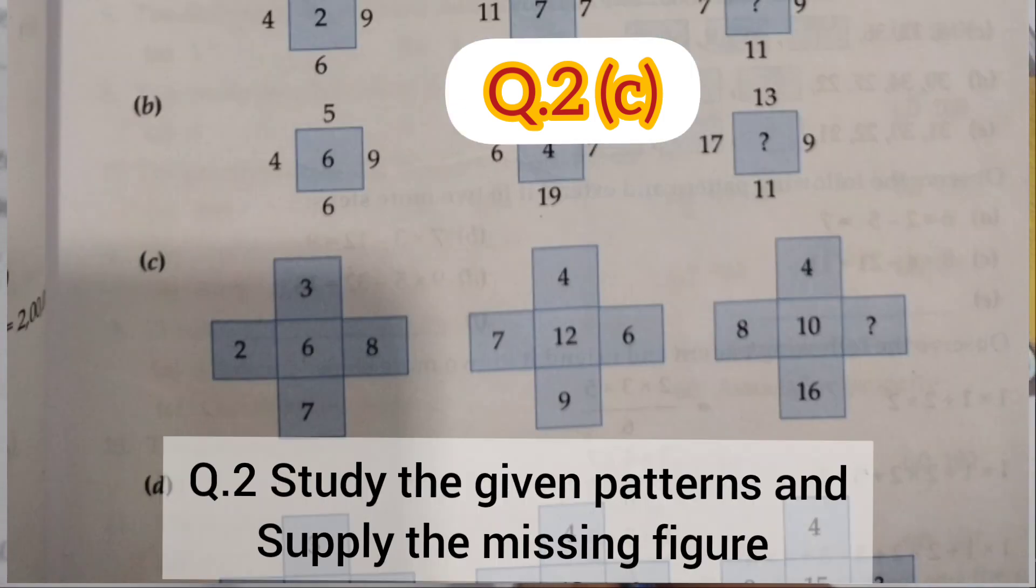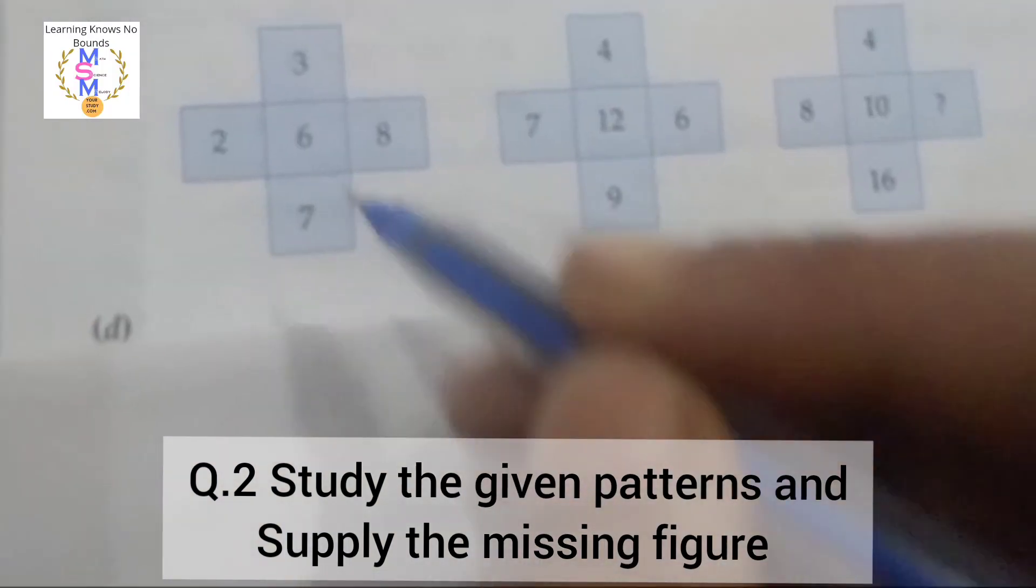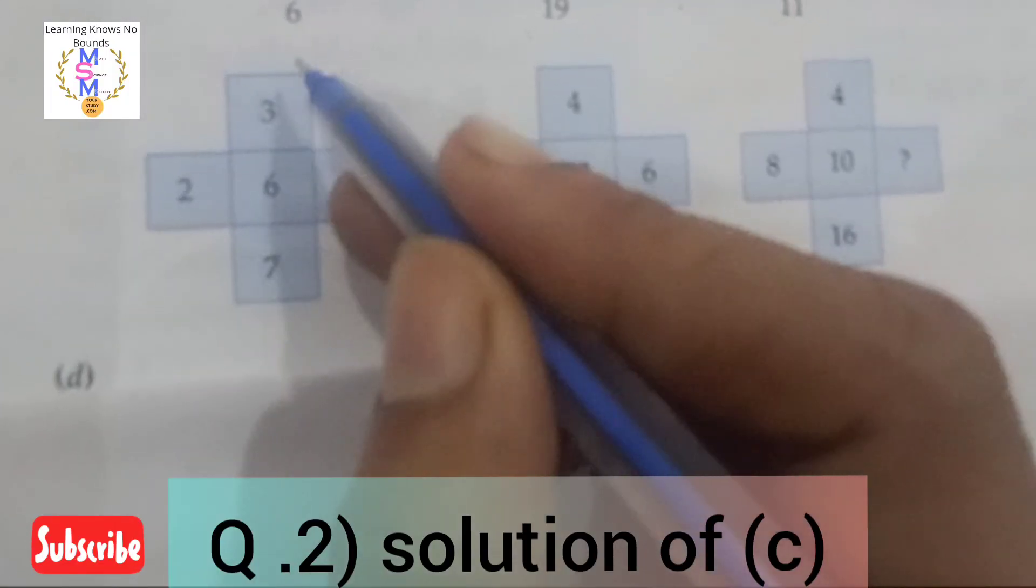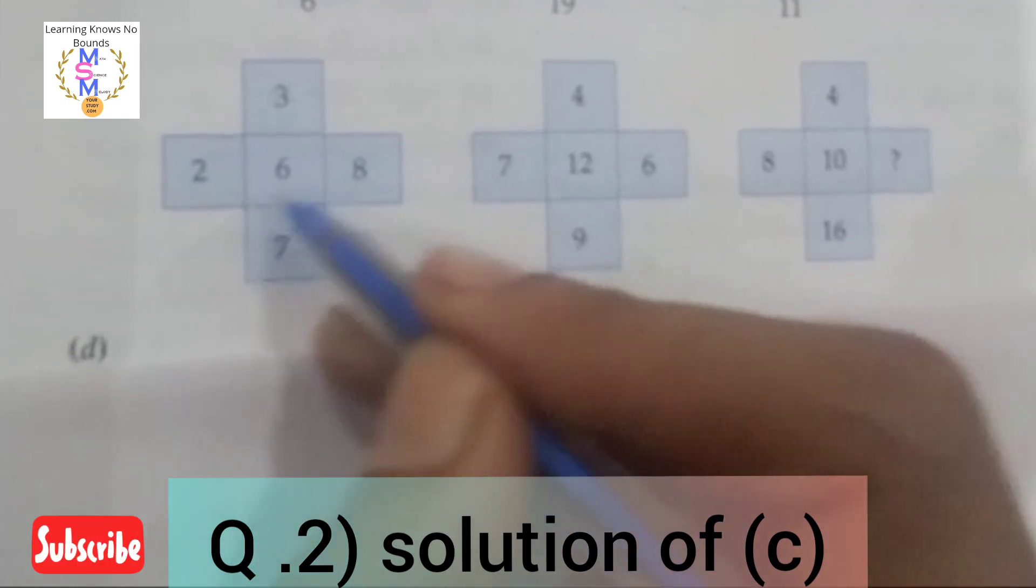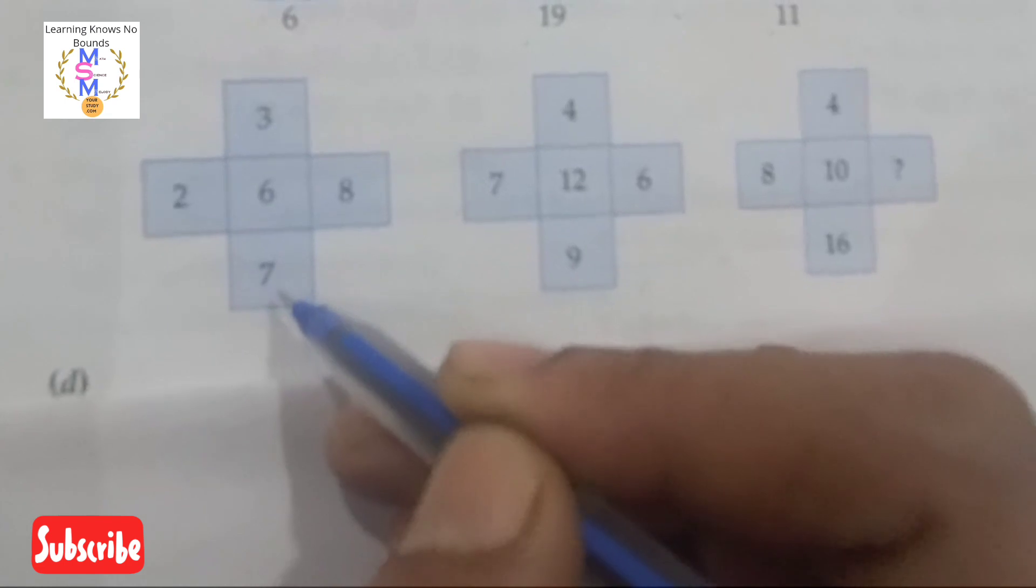The solution for figure number c: as we have done previously for a and b, we will apply the same steps for question number c. Just find the sum of the numbers which are given vertically and horizontally - the addition of numbers in the sleeping line and the standing line.